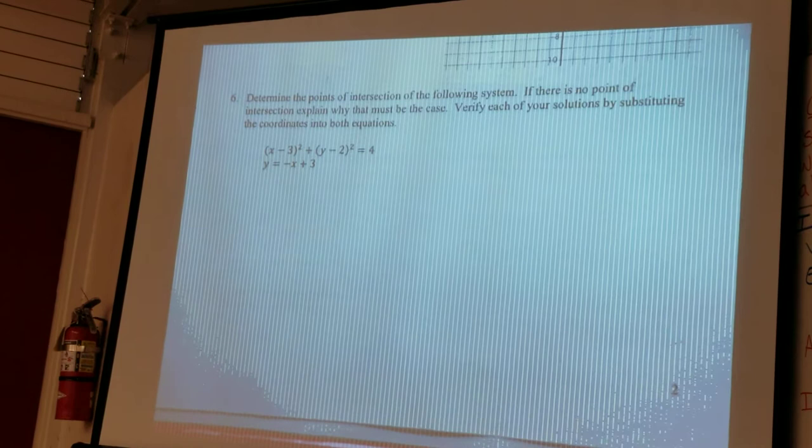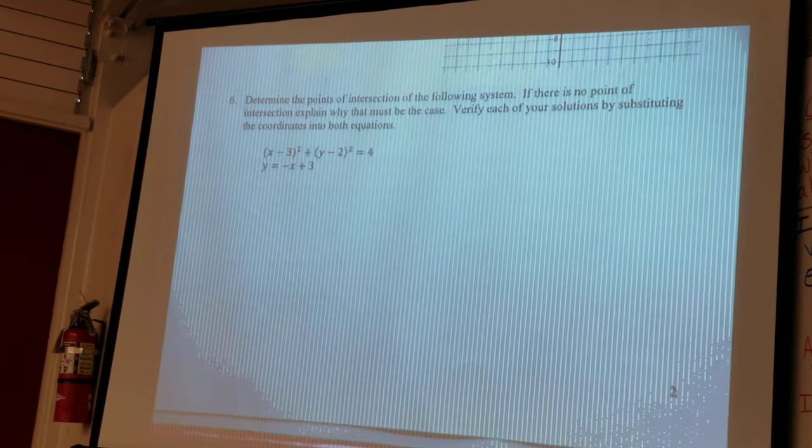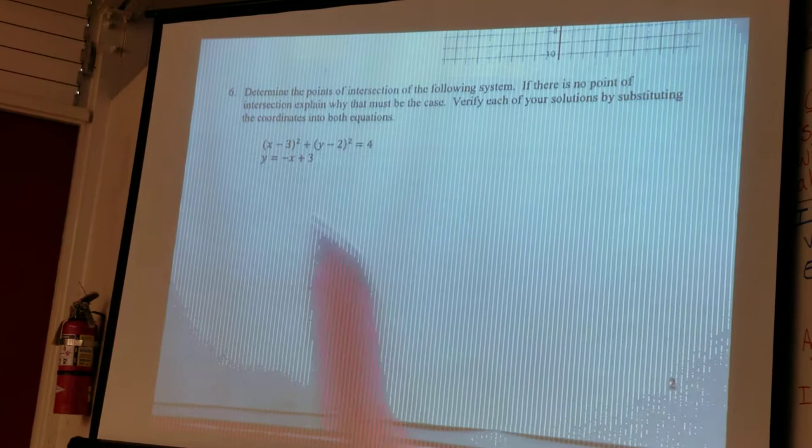Okay, so we're looking at problem 6, which says determine the points of intersection of the following system. If there is no point of intersection, explain why that must be the case. Verify each of your solutions by substituting the coordinates into both equations.